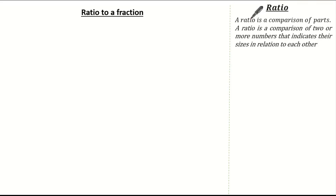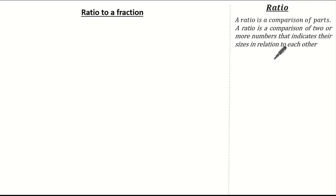A ratio is basically a comparison of parts — a comparison of two or more numbers that indicate their sizes in relation to each other.